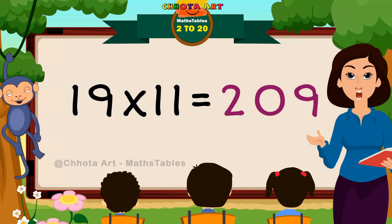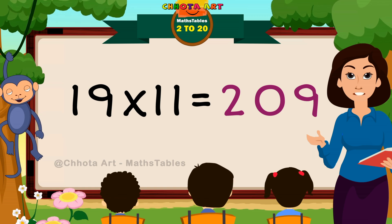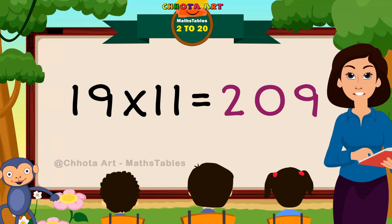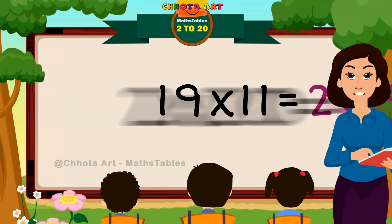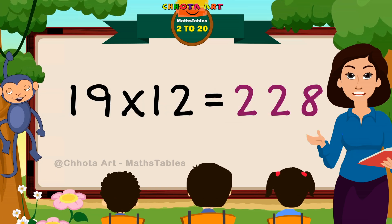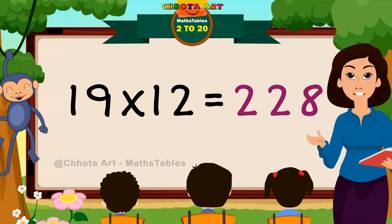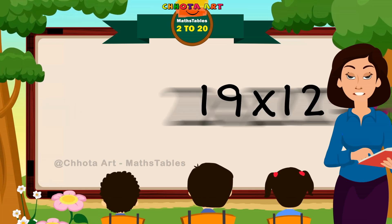Nineteen elevens are two hundred and nine. Nineteen twelves are two hundred and twenty eight.